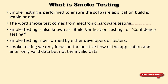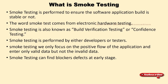In smoke testing we only focus on the positive flows of the application and enter only valid data, not invalid data. If you go entering invalid data and negative cases, that becomes regression testing. In smoke testing, the goal is to verify whether the build is stable enough to proceed. Smoke testing can find defects at an early stage, which is a key advantage — it saves a lot of time that would otherwise be spent on functional and regression testing only to discover a defect and redo everything.